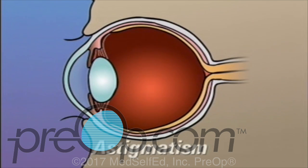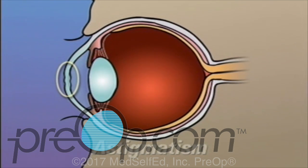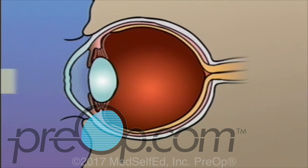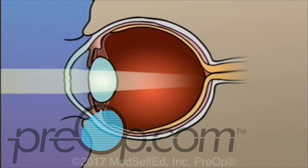Astigmatism occurs when the cornea is unevenly curved, causing light rays to fall off-center or not to focus properly at all.